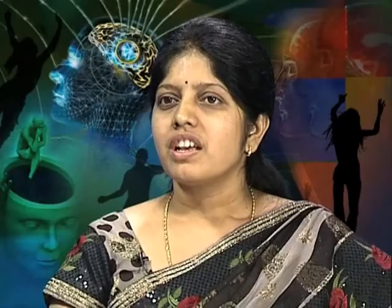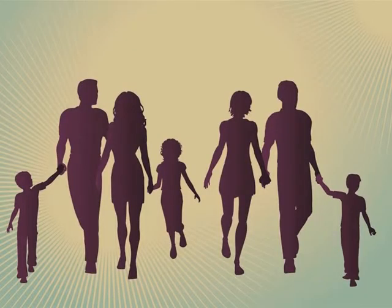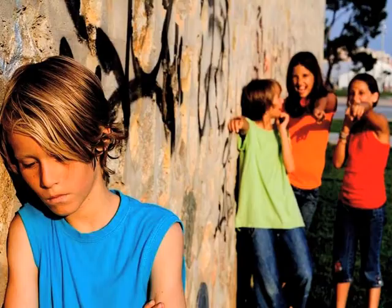You must have heard about antisocial behavior — where pro-social behavior spreads only good, antisocial behavior is all about bad. It involves doing bad things, damaging relationships, and interfering with the smooth functioning of society or the family. Basically, antisocial behavior involves disobeying rules, hurting others, conflicting with them, and behaving in a very unacceptable manner.